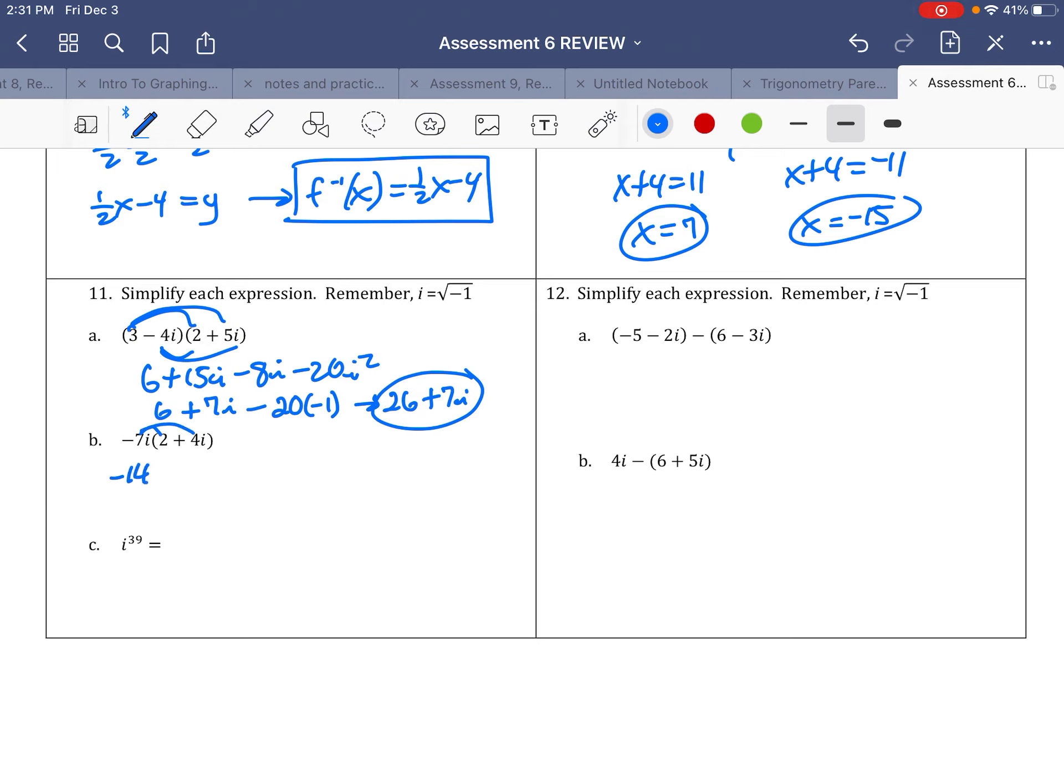Here I just got to distribute. So I get negative 14i, and then negative 28i squared. Well, i squared is negative 1. So that's negative 14i plus 28. And here, i to the 39th, this is one of those ones on the calculator where you press the math button. And then you go to i part, and you plug that into there. So this comes out to negative i when you do that.